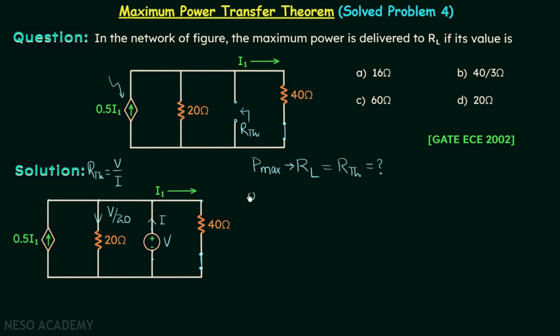We will have 0.5i1 (the entering current) plus I (the entering current) equal to V/20 (the leaving current) plus i1 (the leaving current). When you subtract i1 from both sides, you will have -0.5i1 plus I equals V/20.